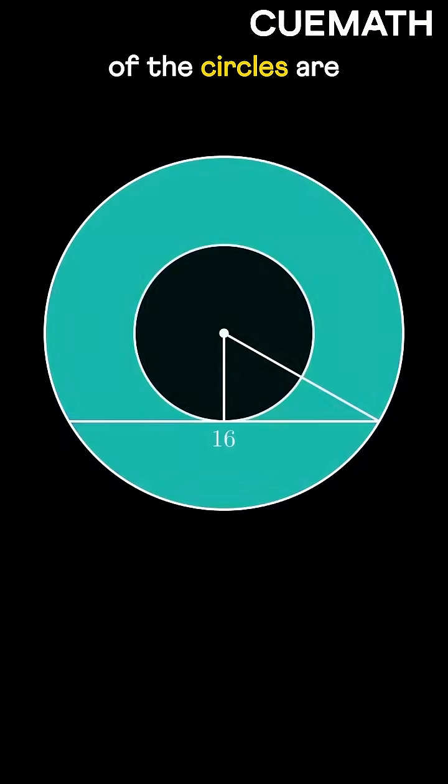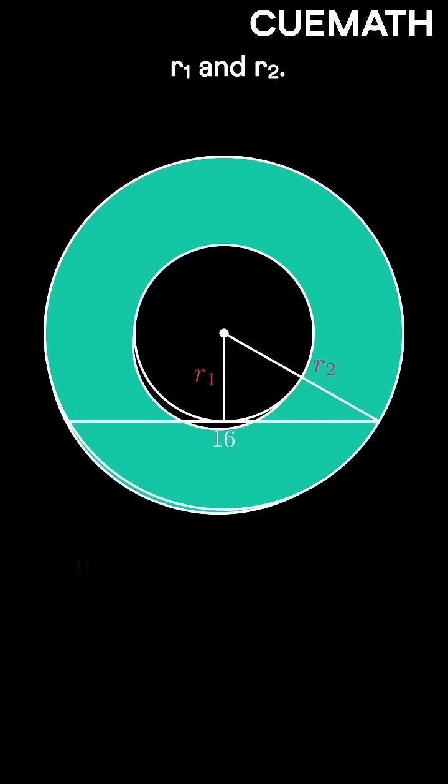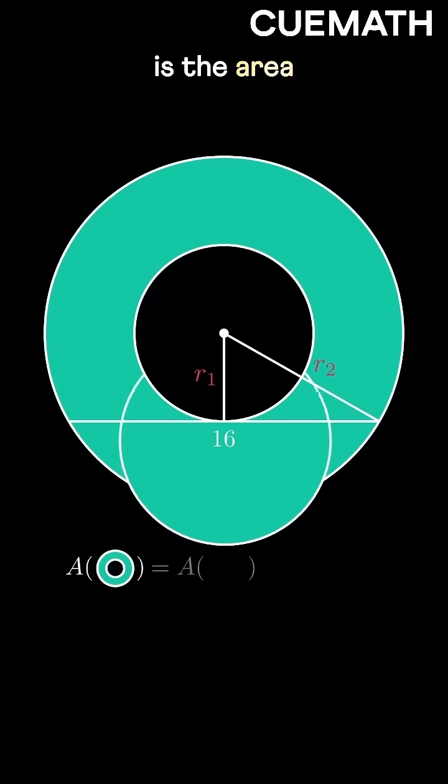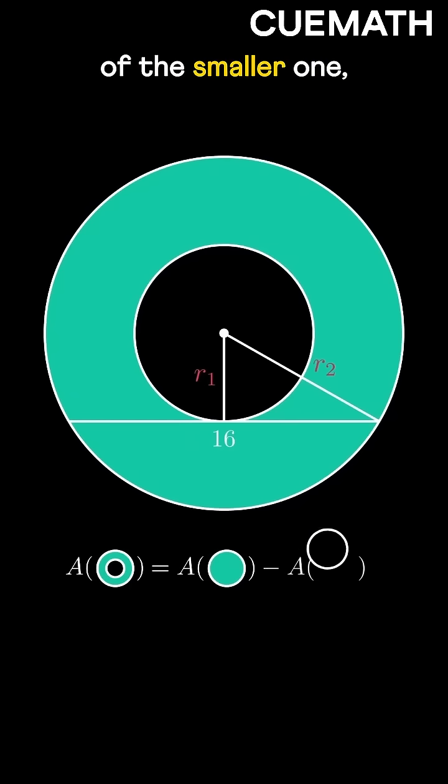Say the radii of the circles are R1 and R2. The area of the ring is the area of the larger circle minus that of the smaller one, or pi R2 squared minus pi R1 squared. But we don't know R1 and R2, so how do we find this?